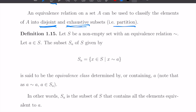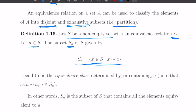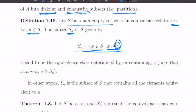Let S be a non-empty set with an equivalence relation tilde defined. Let A be an element of S. The subset S_A of S consists of all elements of S that are equivalent to A. This subset is called the equivalence class determined by, or containing, A. Of course, because of reflexivity...